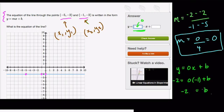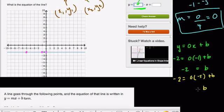And you might think about this. At any point you plug in, if I plug in negative 5, negative 2, that would be 0 times negative 5 plus b is also equal to negative 2. No matter what x values I plug in, it's always going to be multiplied by 0. So those cancel out.